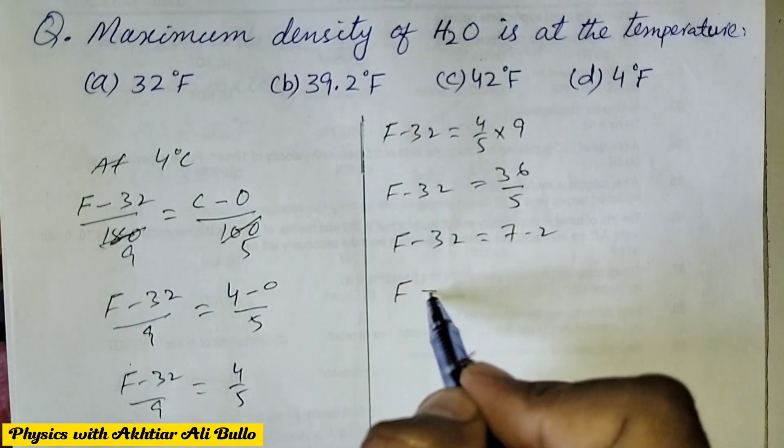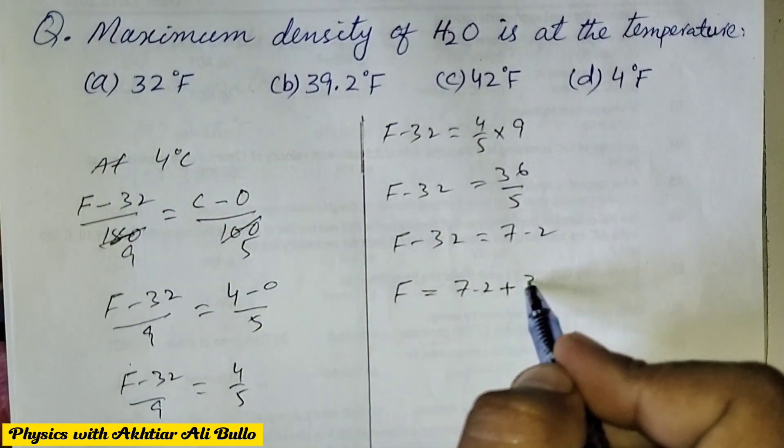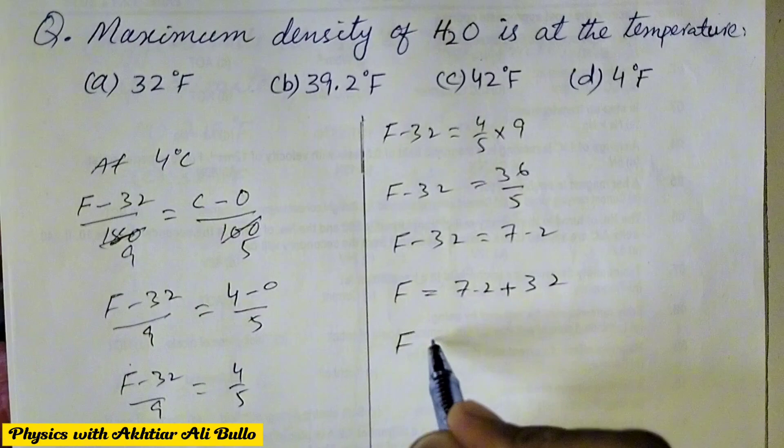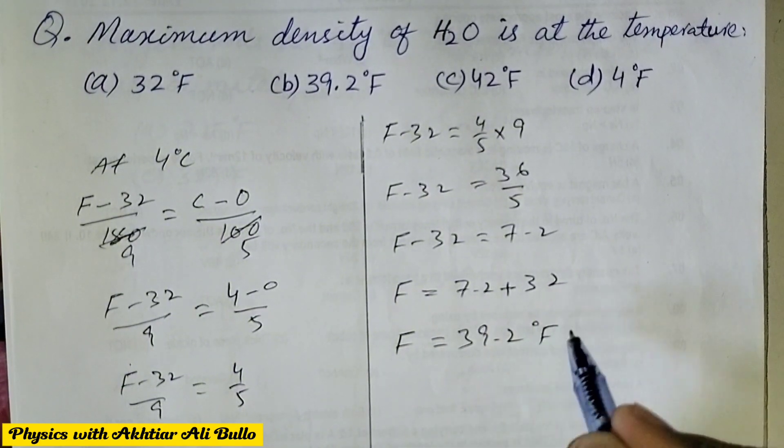F minus 32 is equal to 7.2. F will be equal to 7.2 plus 32. F will be equal to 39.2 degree Fahrenheit.